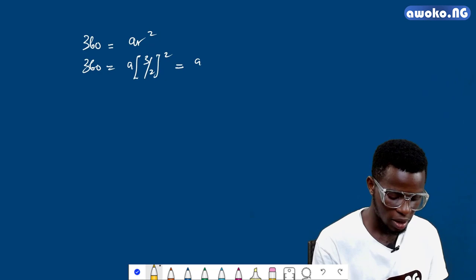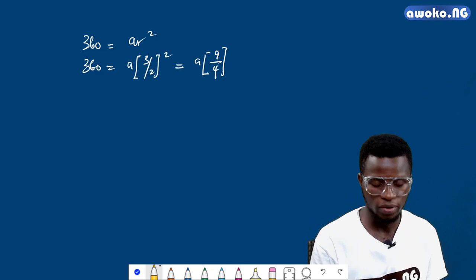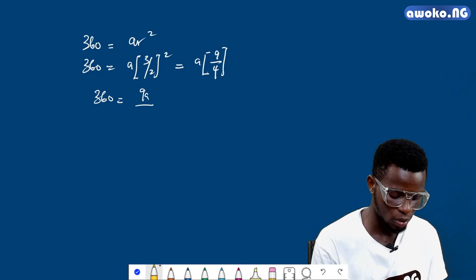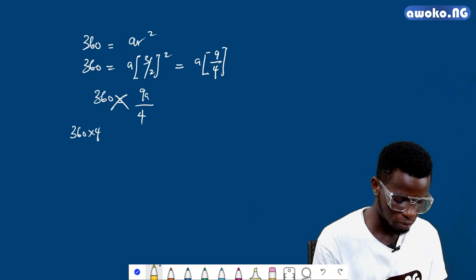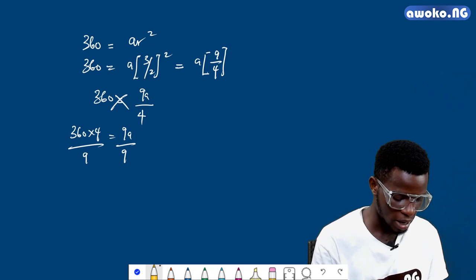Because 3² is 9 and 2² is 4. So we have 360 equals 9a over 4. By cross multiplying, I have 360 times 4 equals 9a. My aim is to make sure that a stands alone, so this will cancel out.